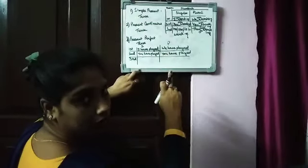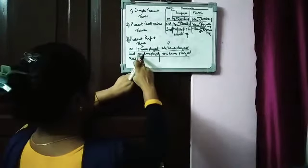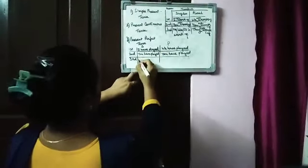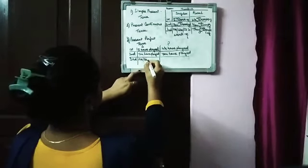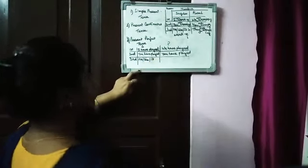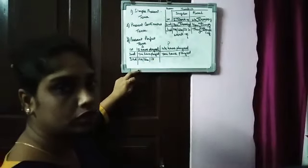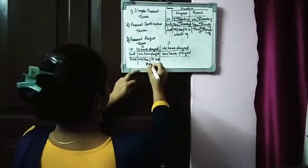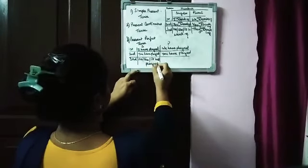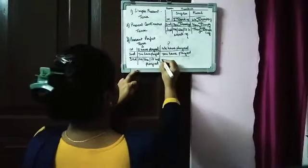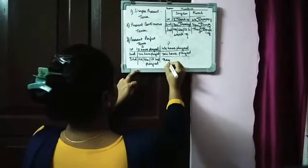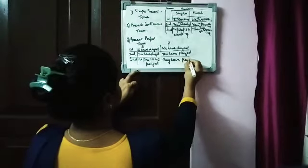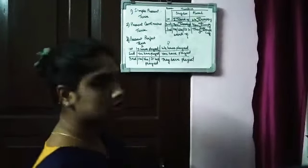Everywhere if you see, I have put have - have, have, have. I have, we have, you have, you have. Now he, she, it - what we are going to put? Has. Has played. And again, they have played.